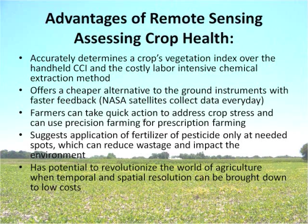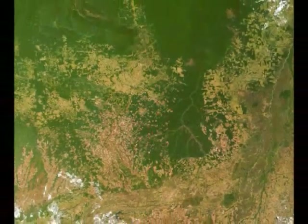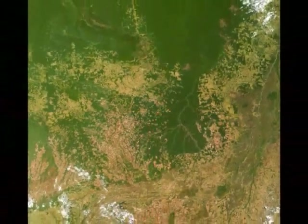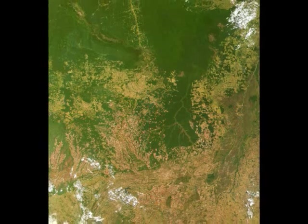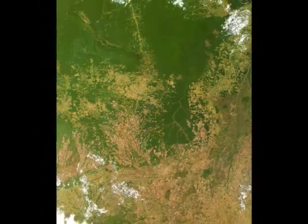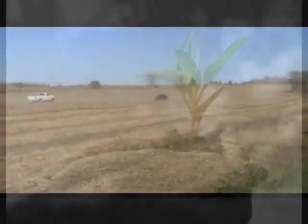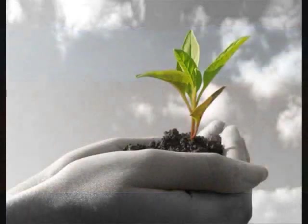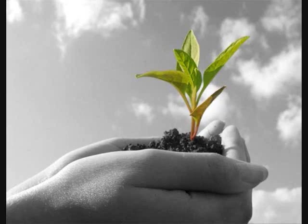Remote sensing can also cut the cost of chemical applications at unneeded points of the field. The remote sensing method is cheaper, and can help farmers reduce costs and environmental impact. It can also cut down the cost of scouting for evaluation of field conditions. This is where GIS and GPS take tomorrow's agriculture to a higher level.